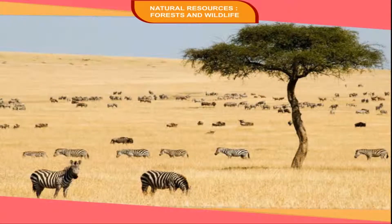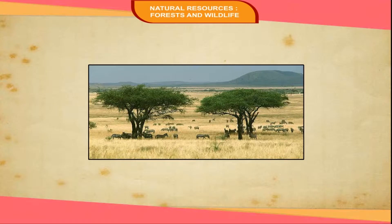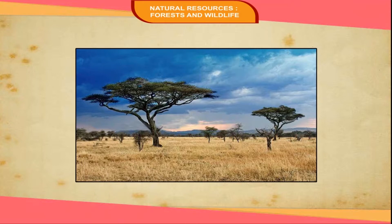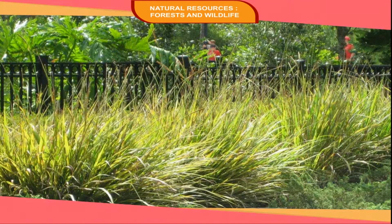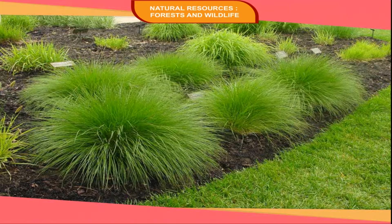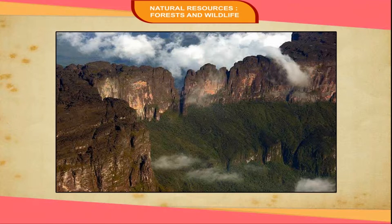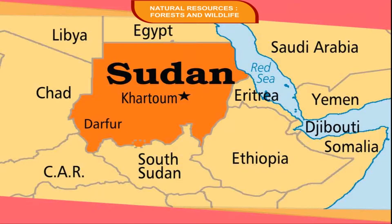Tropical Grasslands, also known as savanna grasslands, are found on either side of the equator in the interiors of continents in the tropical region. The amount of rainfall is moderate and does not allow the vegetation to become thick and dense. These grasslands consist of small trees, shrubs, and grass. The trees are mostly thorny and stunted with reduced leaves that help retain moisture. They are found in northern Australia, the Brazilian highlands, the Guiana highlands in South America, and Sudan.